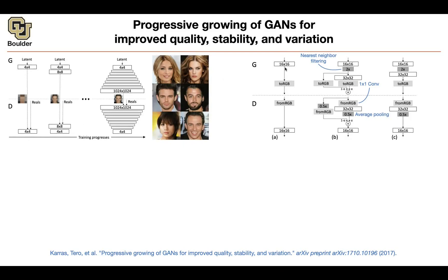You have a 16 by 16 feature map — and by the way, this is going to be 16 by 16 by 512, not three channels. You're going to use 1 by 1 convolutions, which are just pixel-by-pixel matrix multiplications, to turn the 512 channels into three channels: red, green, and blue. So wherever you see 'to RGB,' it's just a 1 by 1 convolution changing the dimension from 512 to 3. Each pixel is 512-dimensional; you multiply by a 512 by 3 matrix to get a 16 by 16 RGB image. That's your generator and discriminator setup.